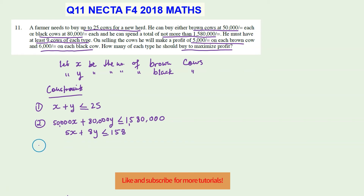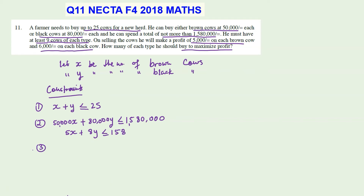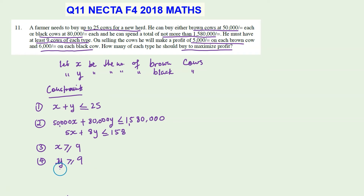The third constraint: he must have at least nine of each type, so x must be greater than or equal to 9. The fourth constraint: y must also be greater than or equal to 9. These are our mathematical constraints which we are going to use.